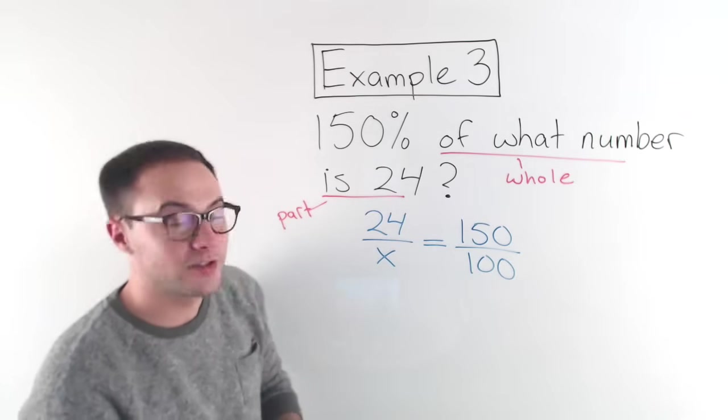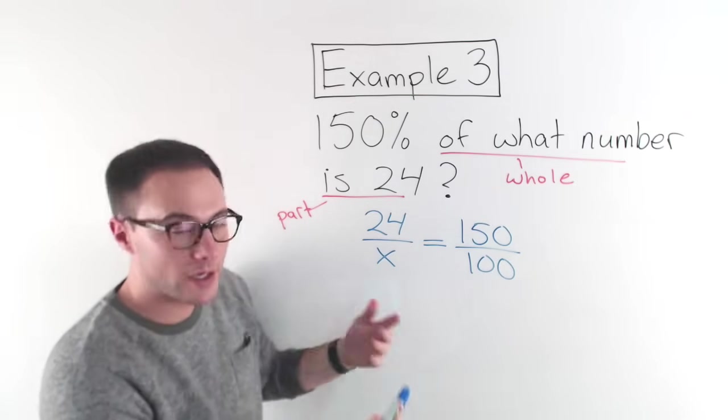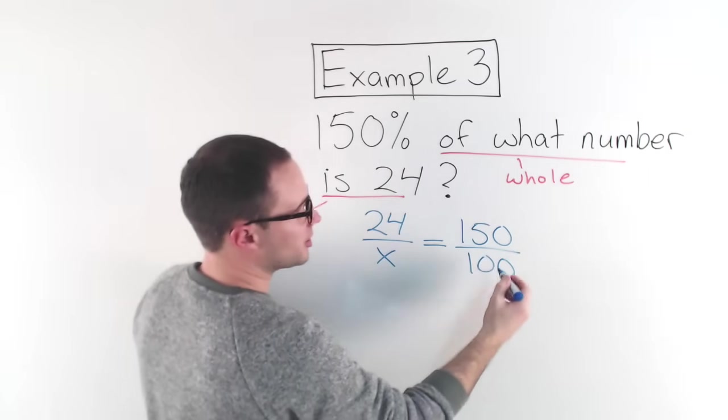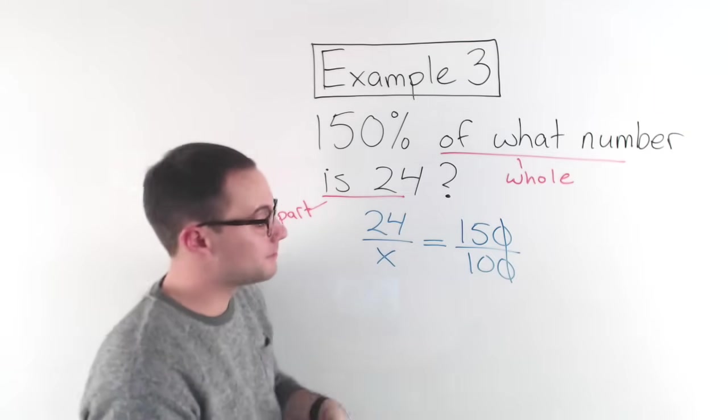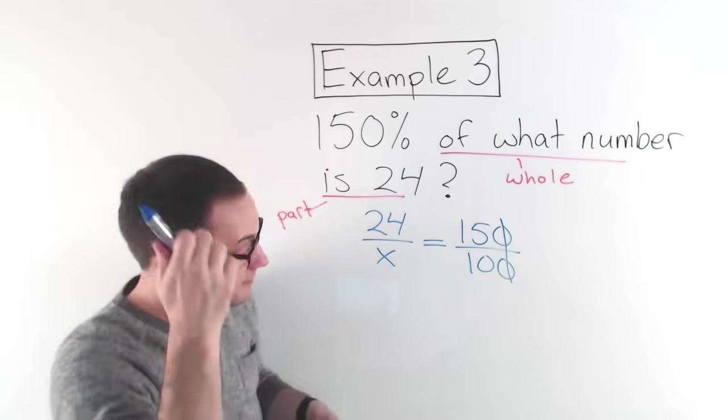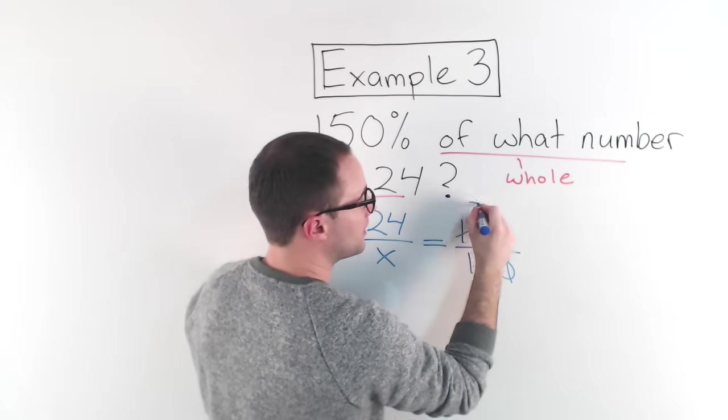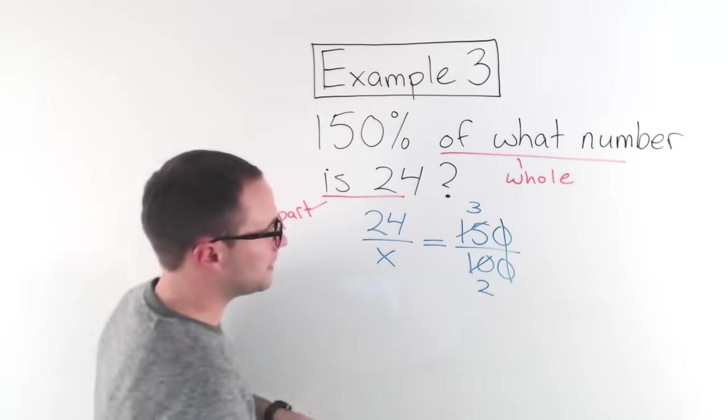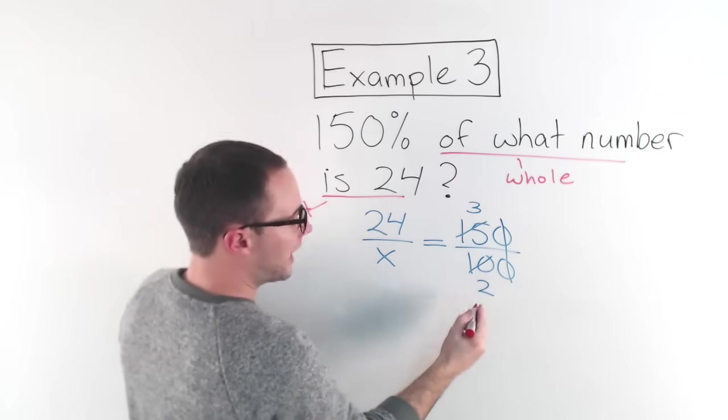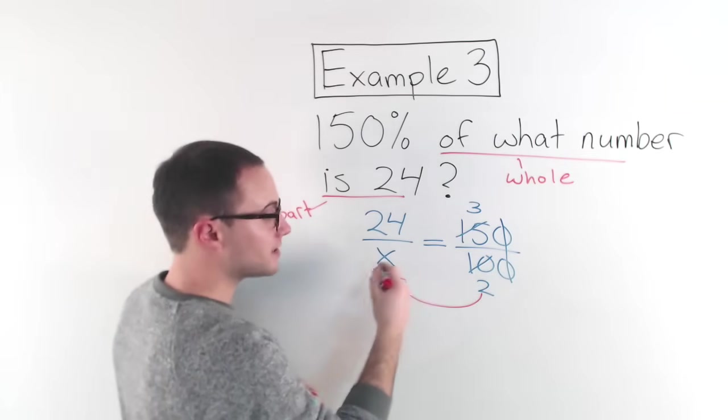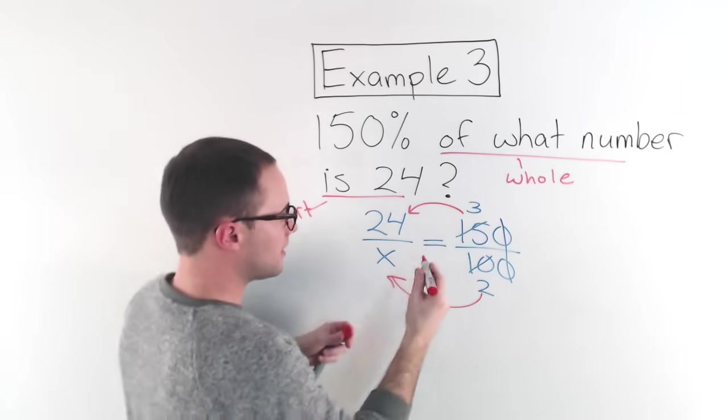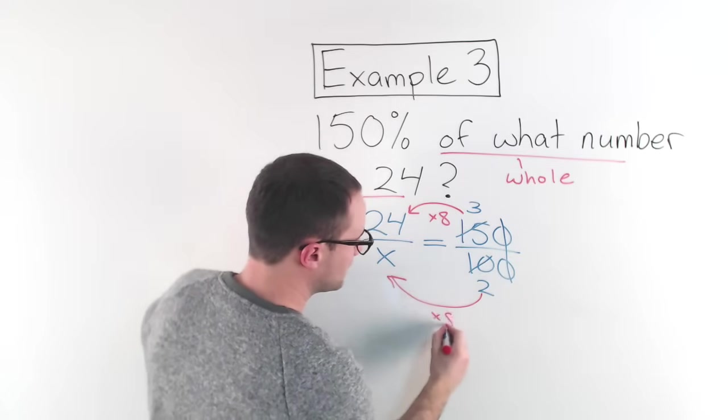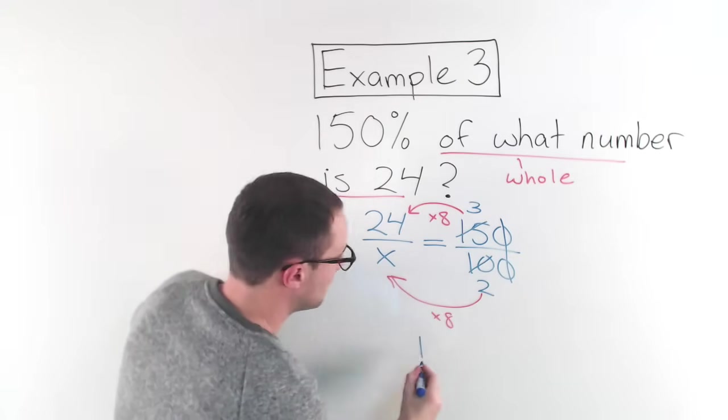So here is my proportion. Now let's solve. Again, try to simplify before you do any solving. So first, well, 150 and 100. I could easily just take off those zeros. Divide both by 10. 15 and 10. 5 is a common factor. So that would become 3. That would become 2. And now, again, it becomes pretty simple. It's just to use mental math. I'm trying to figure out what x is. I'm going this direction. So I'm going that direction here. 3 times 8 is 24. So 2 times 8 will give me 16. Okay?